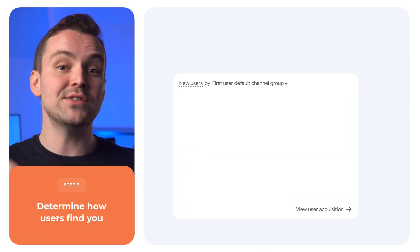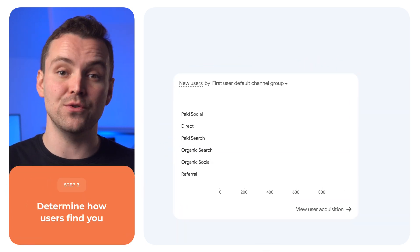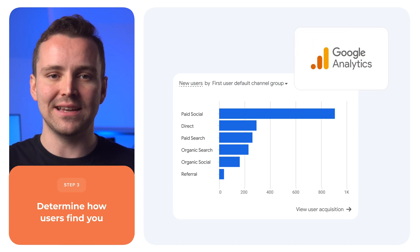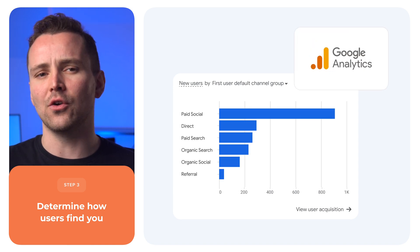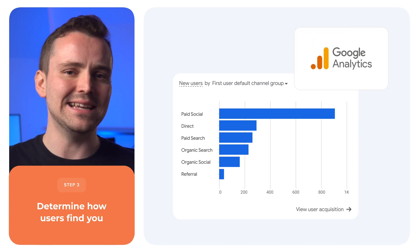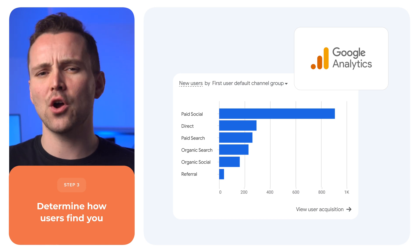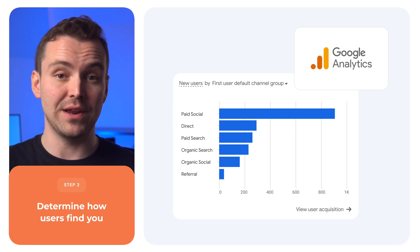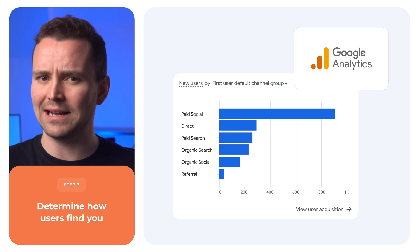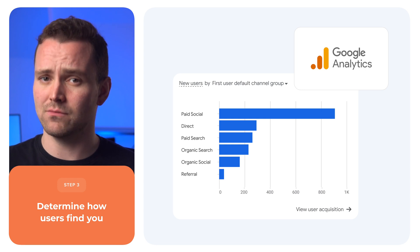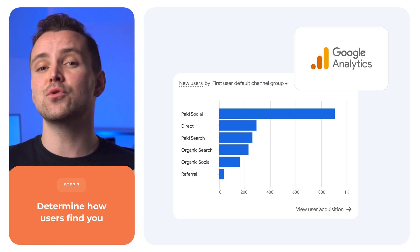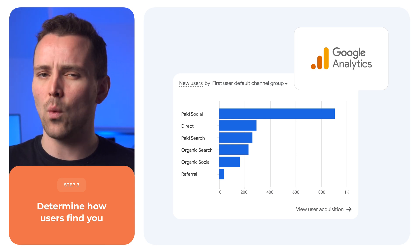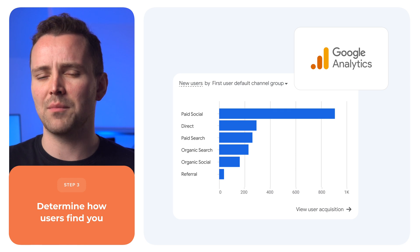Step 3: Determine how users find you. Optimizing the entry point is key because it tells you a lot about user needs and motivation. A person arriving via a paid ad is going to have different intent than someone coming directly to your page. Sift through Google Analytics and your CRM to source where folks are coming from.